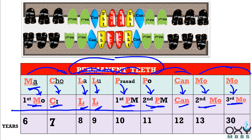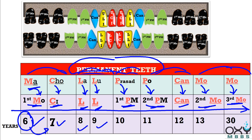This sequence is in years. Start from 6 years of age and just keep writing continuously: 6, 7, 8, 9, 10, 11, 12, 13 — and at the end, 25–30 years of age for the third molars.